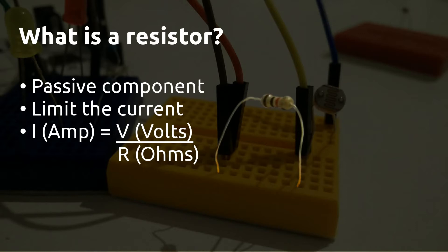Resistors are passive components designed to limit the current in a circuit. As Ohm's law states, the current is equal to the voltage divided by the resistance (I = V/R).